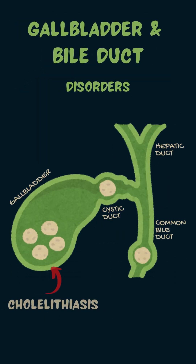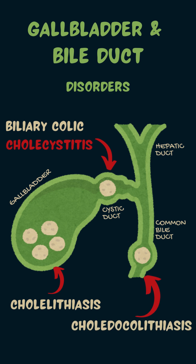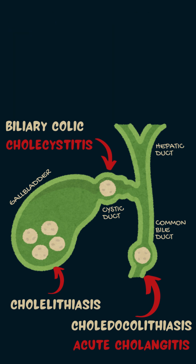In summary: Cholelithiasis refers to gallstones with no symptoms. Biliary colic refers to the temporary blockage of the cystic duct. Cholecystitis refers to an inflamed gallbladder resulting in severe right upper quadrant pain and a fever. Choledocholithiasis refers to stones in the bile duct causing jaundice. Cholangitis is a medical emergency referring to infection in the common bile duct, leading to fever, jaundice, and right upper quadrant pain.